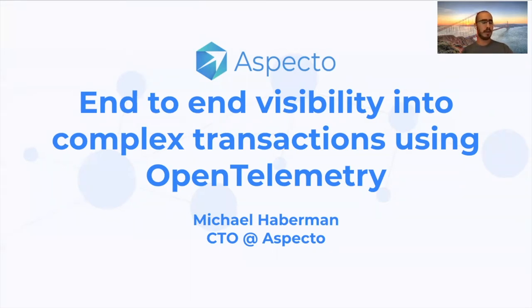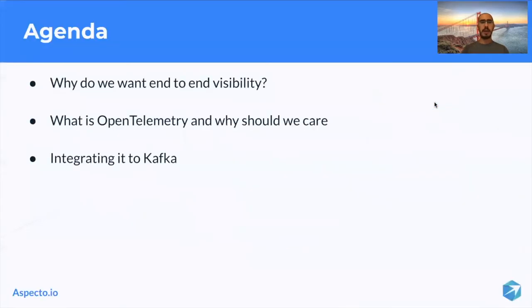We're talking about the scenario when you have services communicating using some kind of a message broker, such as Kafka, RabbitMQ, Redis, Pub/Sub, SQS — any one of those kinds. We are trying to make sure we are able to visualize an entire process. We'll do that by first understanding what is end-to-end visibility, what it means, and what our expectations are when we say end-to-end visibility.